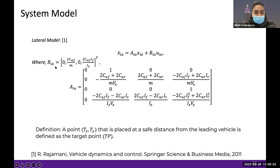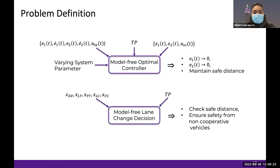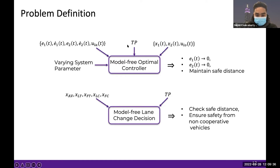These are the system matrices A_LA and B_LA. An important point is to define the target point: a point (TX, TY) placed at a safe distance from the leading vehicle is defined as the target point. The problem we are trying to solve requires the state and input information and the definition of a target point. After receiving the state information and information about the target point, we design a model-free optimal controller that guarantees convergence, ensures that errors E1 and E2 converge to zero, and is also responsible for maintaining safe distance from surrounding vehicles.